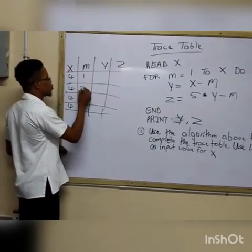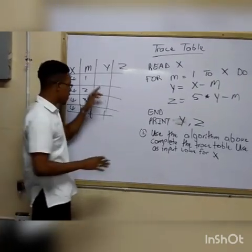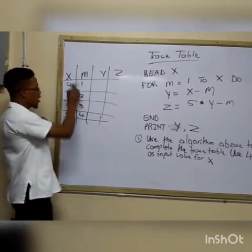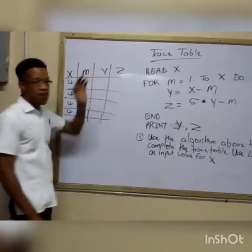Now for the m section of the trace table, we will have 1, 2, 3, 4. So remember, start value, end value. And remember why we have 4 over here, because that's the input value. So let's calculate.